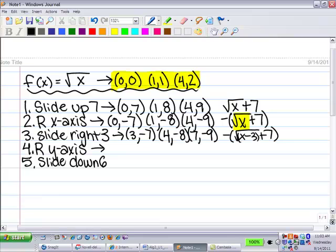And then I reflected over the y-axis and made all the x values negative. And then I changed the equation to this. And the x has to be negative now, so there has to be two parentheses. And negative three. And then plus seven.